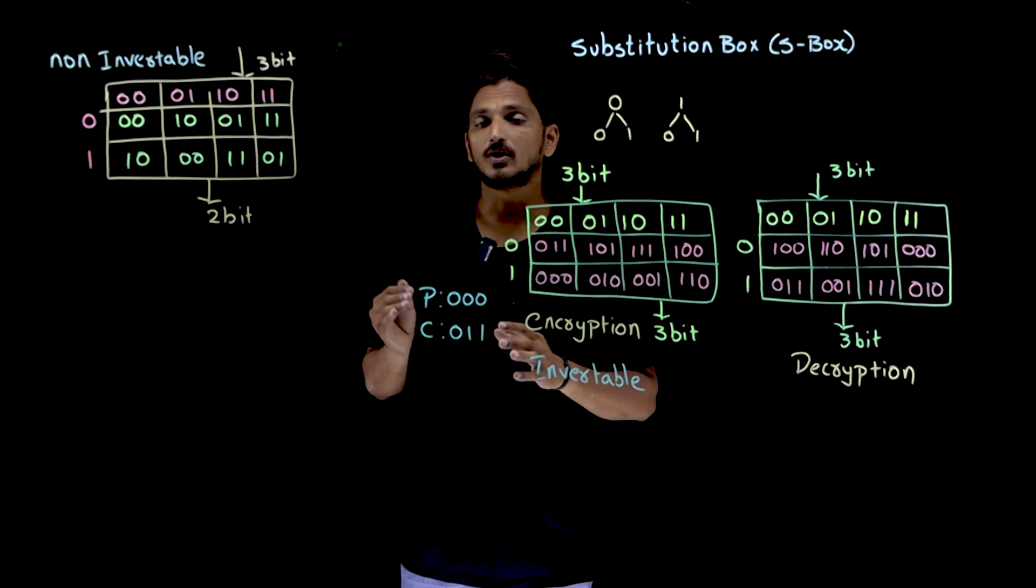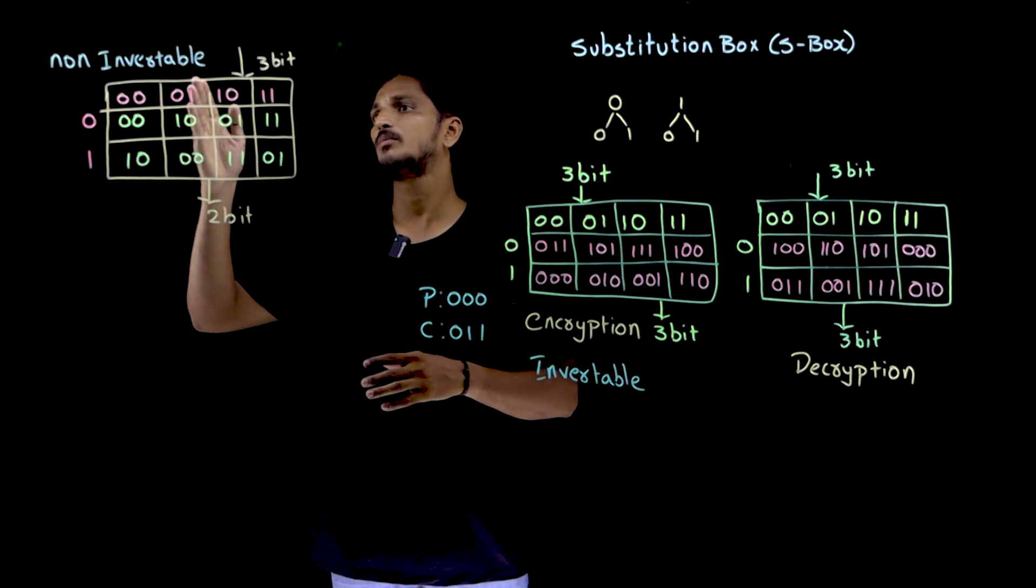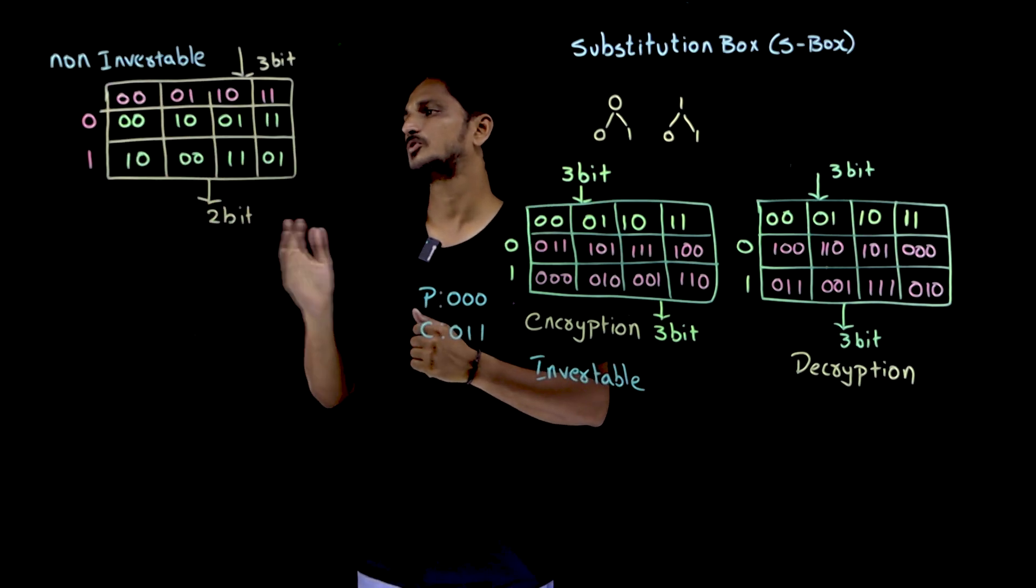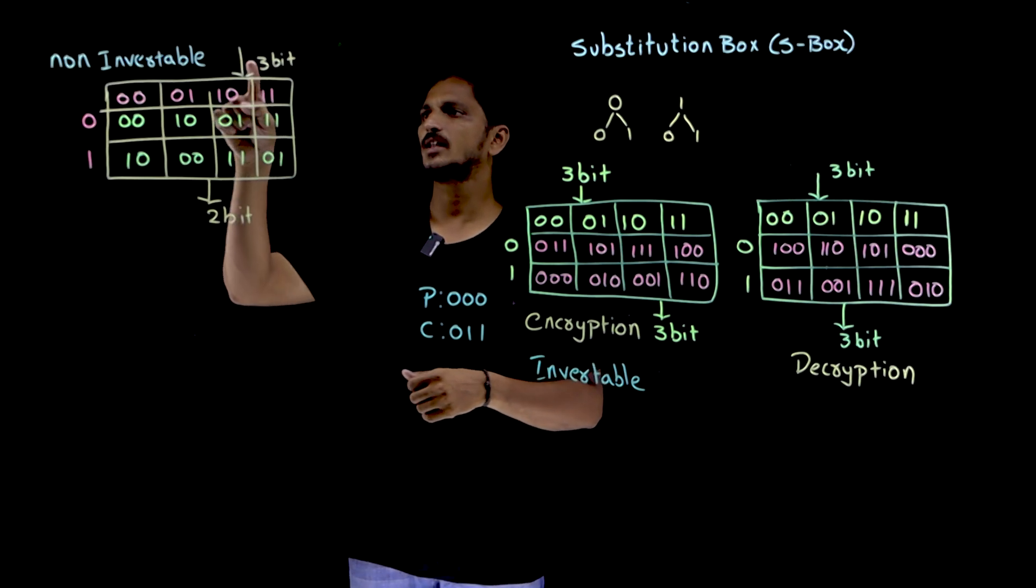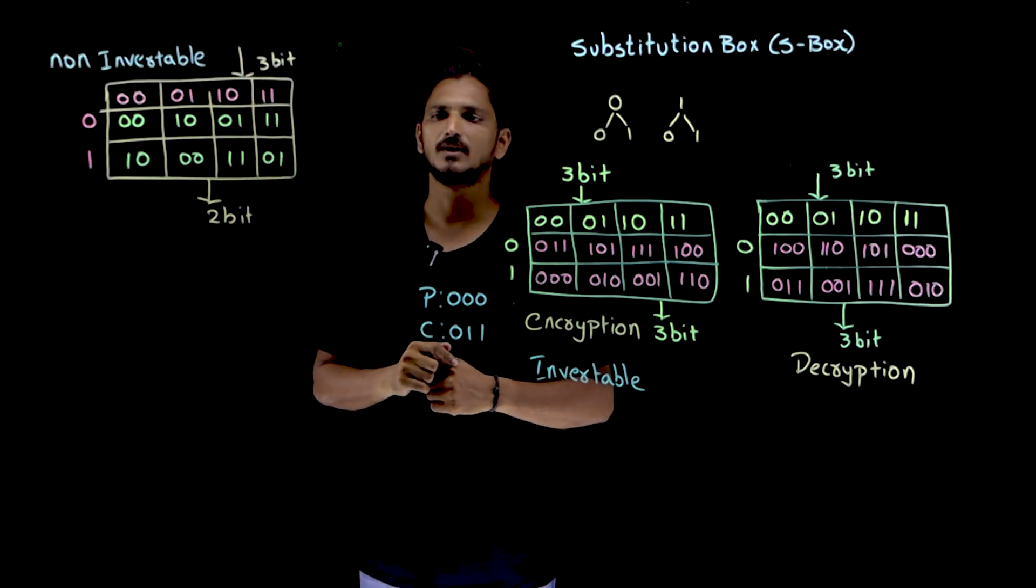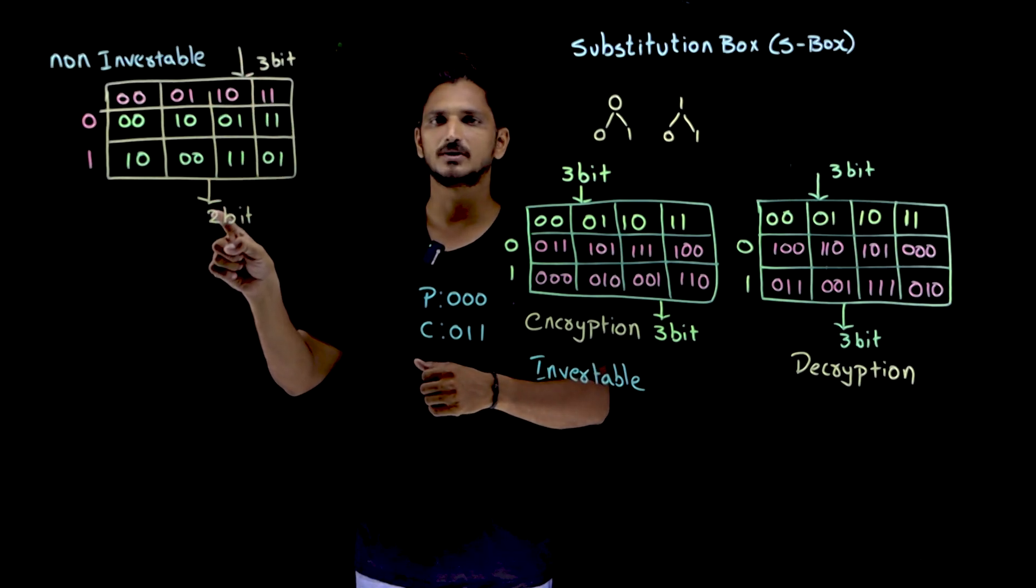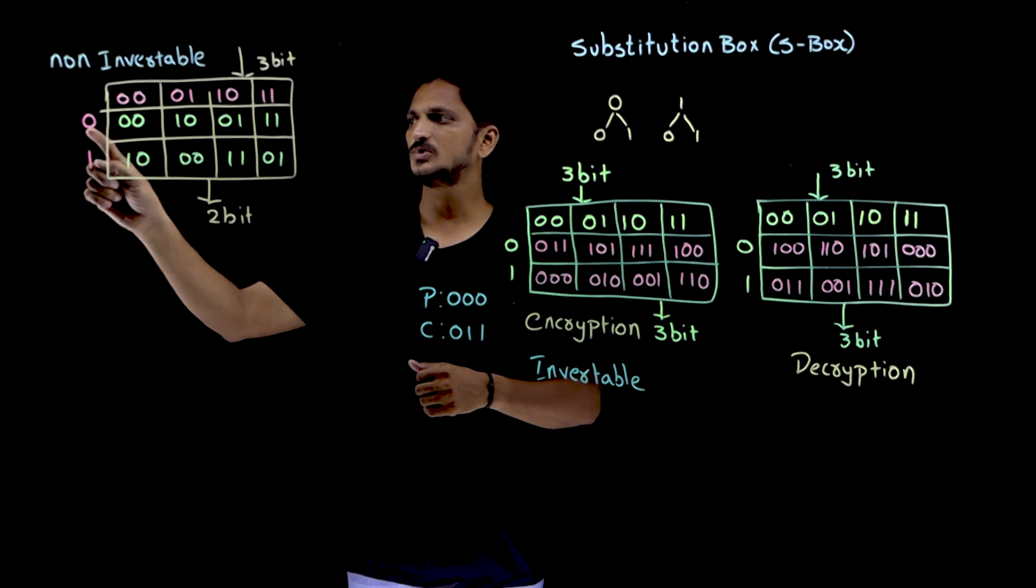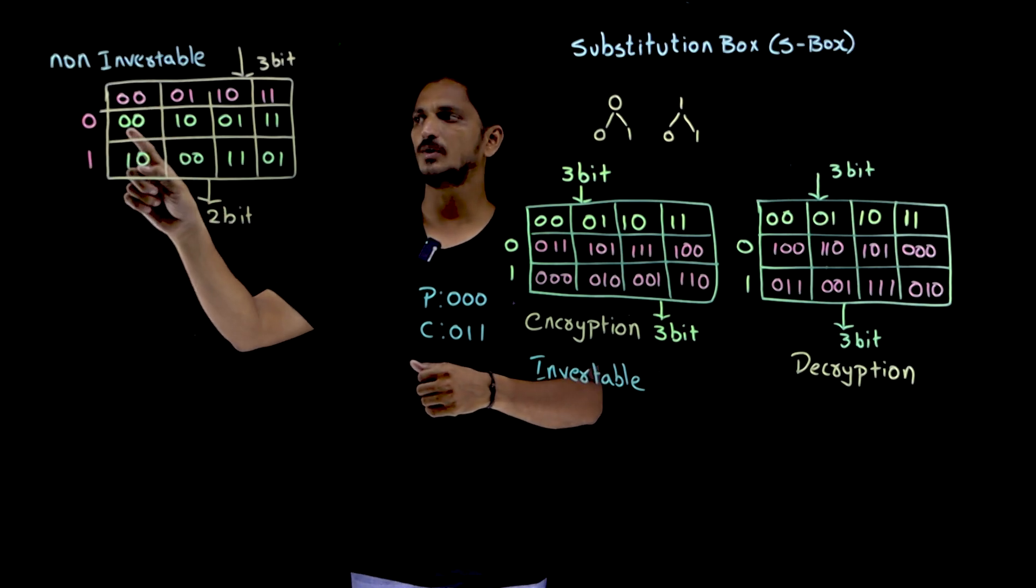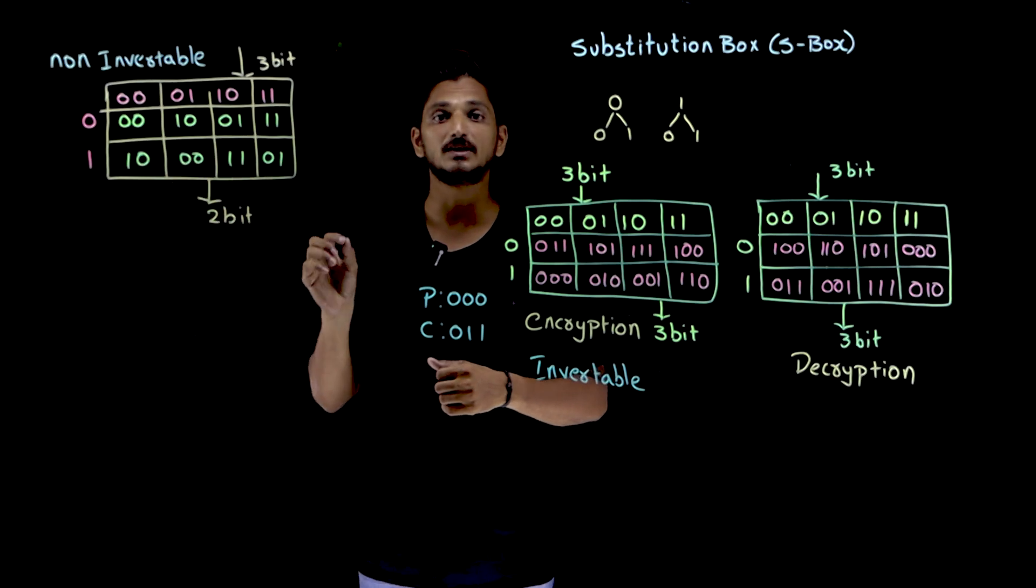And now coming to the non-invertible substitution box. See here, the input bits are 3 bits and the output bits are 2 bits. You take the input same 0 0 0. In place of 0 0 0, you are replacing 0 0.